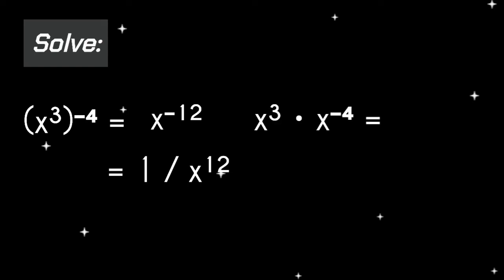Another situation: x cubed times x raised to the power of negative 4. Following the law of exponents, we add the exponents with the same base, so the answer is x raised to the power of negative 1. Applying the negative power rule, the final answer is 1 over x.